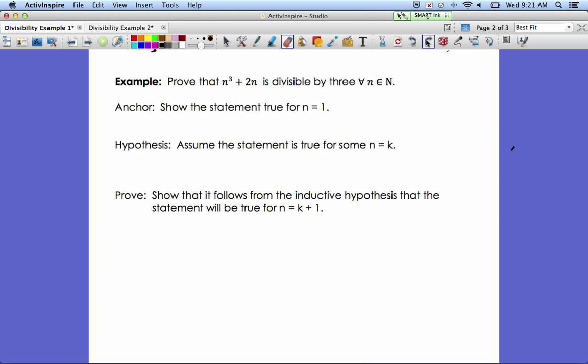So first, we will show that the statement is true for n equals 1. So just plugging 1 in for n. When we plug 1 in for n, we get 1 cubed plus 2 times 1, which is equal to 3. And, hey, 3 is divisible by 3, so we just showed that condition 1 is met.